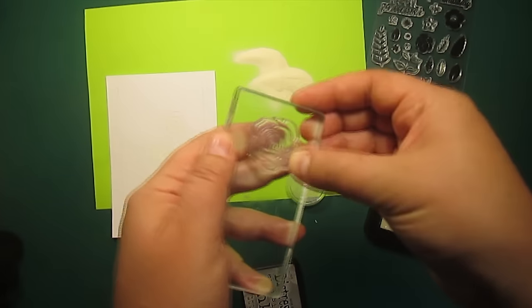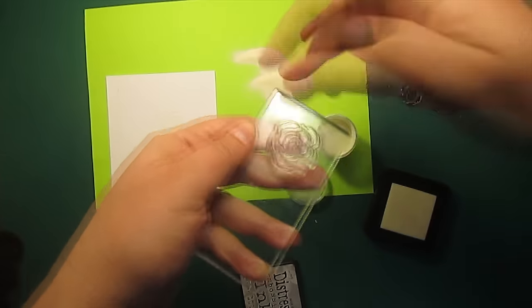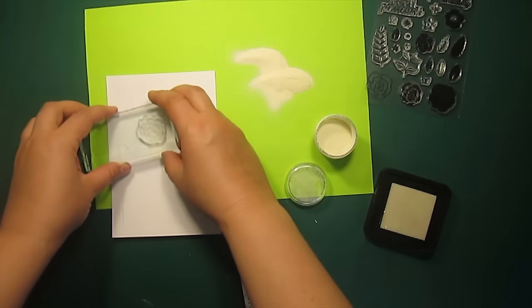To create a small rose I'm inking up the image and then wiping off the ink from the outer petals with my finger.